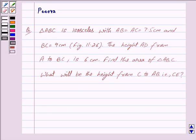Hi friends, I am Purva and today we will discuss the following question. Triangle ABC is isosceles with AB equals AC equals 7.5 cm and BC equals 9 cm.